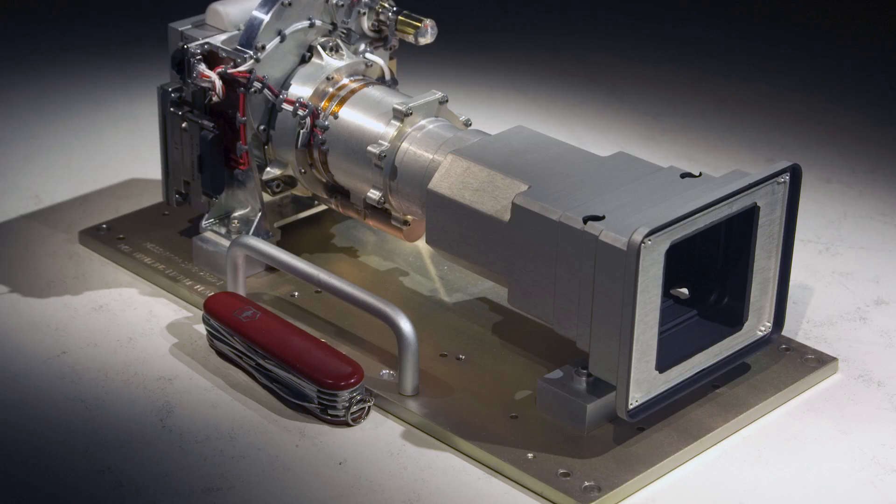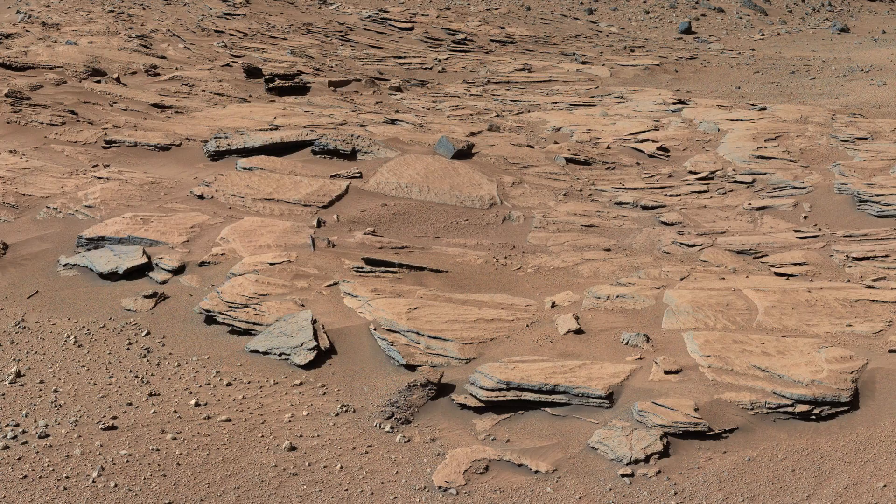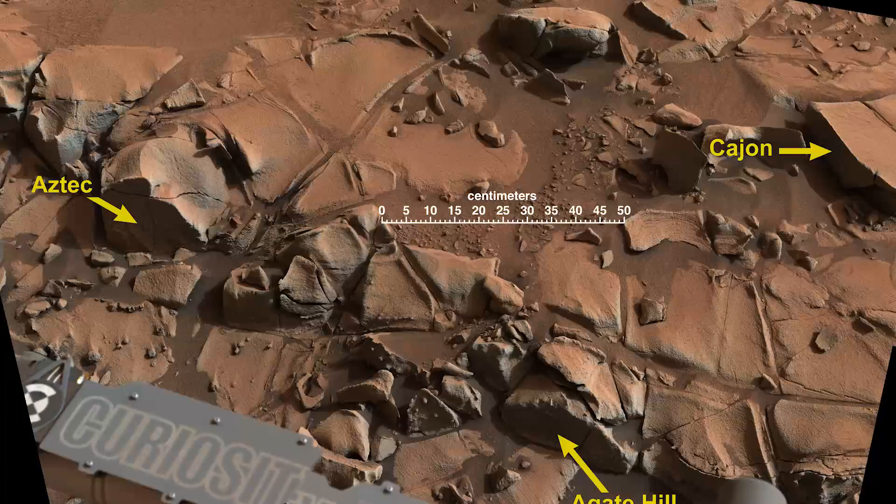Since the Curiosity rover is larger and has a lot more power, it's able to conduct more experiments. The first camera it has is the mast camera, which is at the top of Curiosity. It takes true color images of the surface so we can analyze the surroundings and get good pictures of what it's looking at.